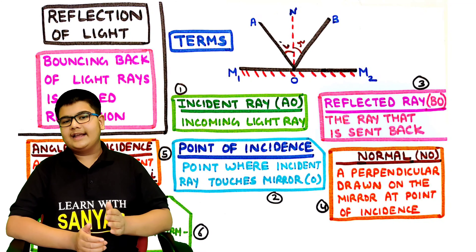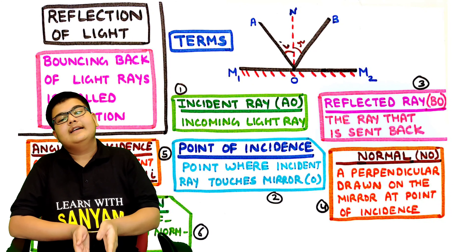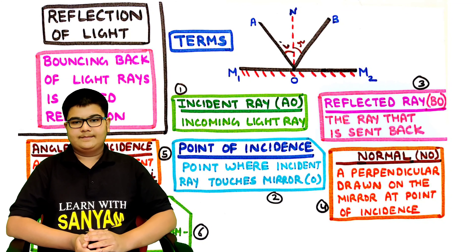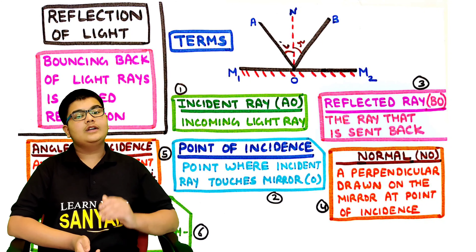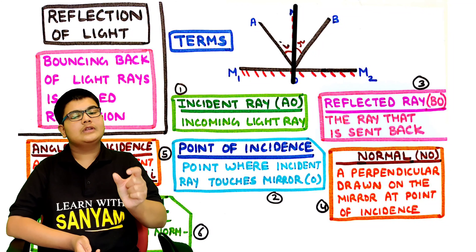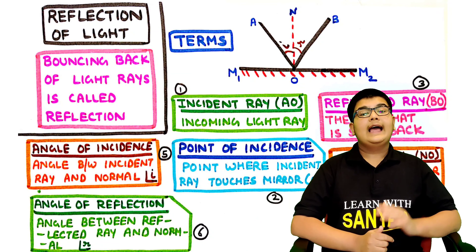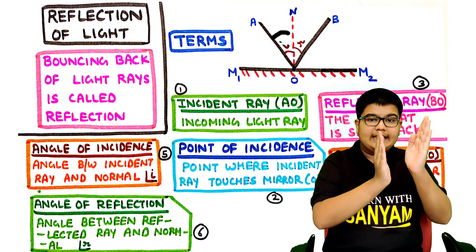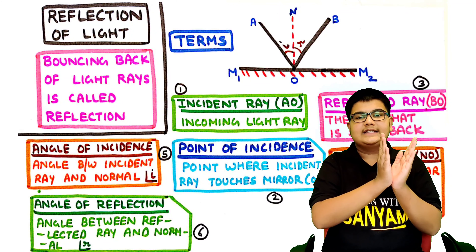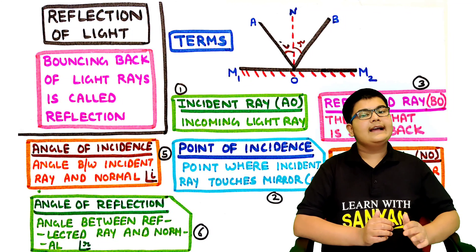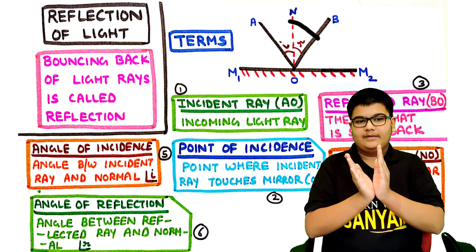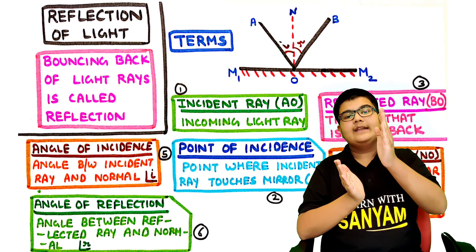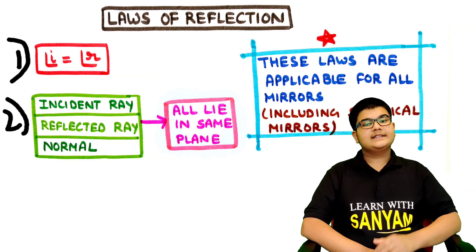Third, reflected ray — this is the ray that is sent back. The incident ray is incoming and the reflected ray is the ray being sent back. In this case, BO is the reflected ray. Fourth, normal — the perpendicular drawn on the mirror at the point of incidence is called normal. As you can see, NO is perpendicular to the mirror, so NO is the normal. Fifth, angle of incidence — the angle between the incident ray and the normal is called angle of incidence. Angle AON is the angle of incidence, denoted by small i. Sixth, angle of reflection — the angle between the reflected ray and the normal, denoted by small r. Its value is angle NOB.